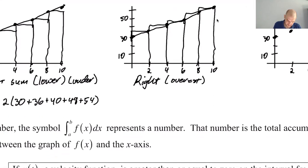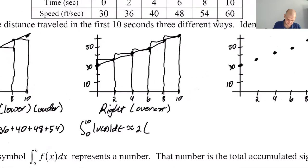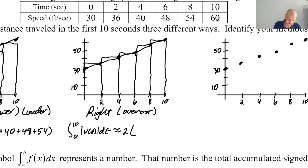So now we want to say the integral from zero to ten of the absolute value of v of t dt because it's speed, approximately. They're all two and then we just need our numbers, right? So you don't use the 30, right, because that's the left endpoint. And then you use all of them: 36, 40, 48, blah blah blah. So we'll go 36 plus 40 plus 48 plus 54 plus 60.